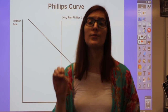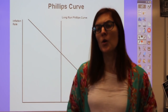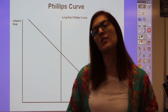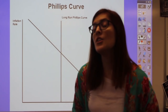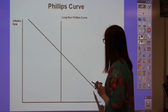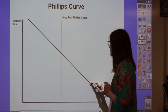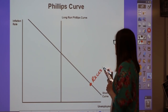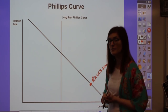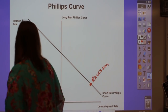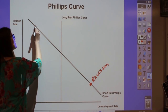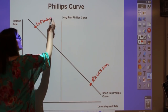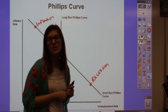The short run Phillips curve describes aggregate demand and short run aggregate supply changes. The long run Phillips curve serves two purposes, just like the long run aggregate supply line. To show a recession, plot a point down and to the right of the long run Phillips curve, closer to unemployment. To show inflation, plot a point up and to the left of the long run Phillips curve, closer to high inflation—mirroring how recession and inflation appear in the aggregate model.